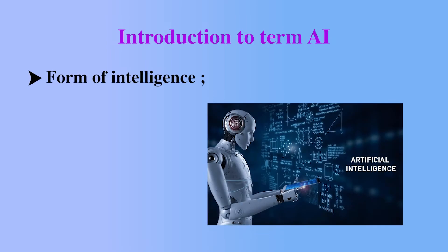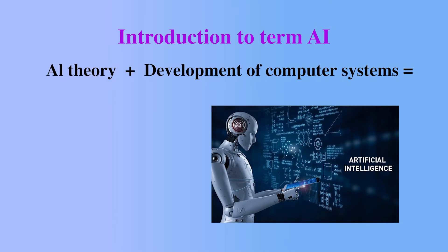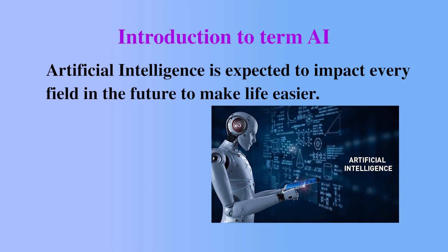Let us have an introduction to the term AI. AI can be termed as a form of intelligence, a technology, a field of study. AI: theory plus development of computer systems results in mimicking human intelligence. When we are able to advance our systems to such an extent that theoretical concepts of AI are incorporated into them, we will be able to make machines think and behave like humans. Artificial intelligence is expected to impact every field in the future to make life easier — AI is to make machines and algorithms which can perform computational tasks just like the human brain. That is why it is known as artificial intelligence: made by humans, for humans.